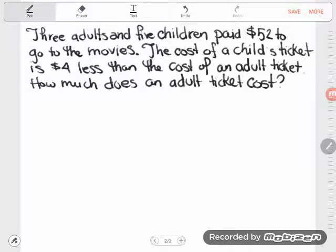So here we have another algebraic style word problem. Let's go ahead and read it. Three adults and five children paid $52 to go to the movies. The cost of a child's ticket is $4 less than the cost of an adult ticket. How much does an adult ticket cost?